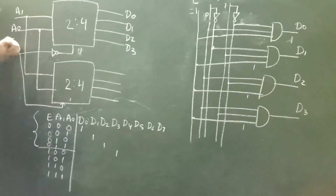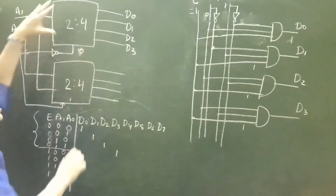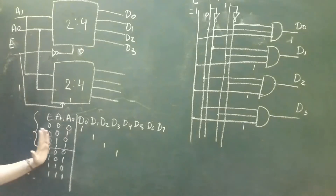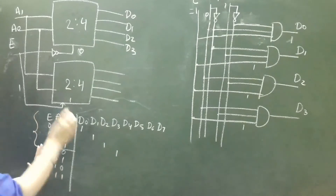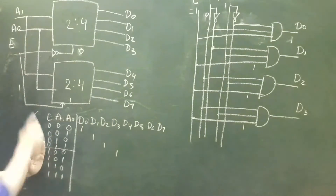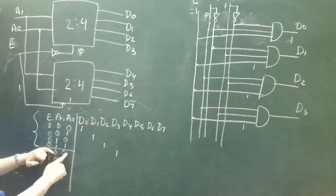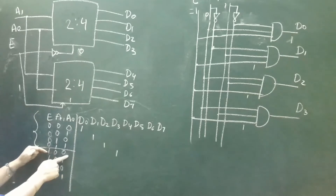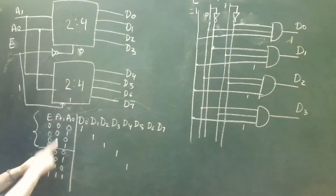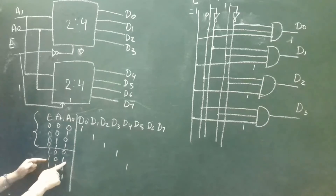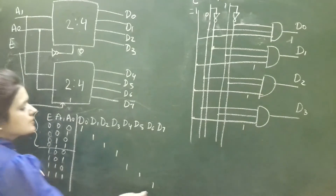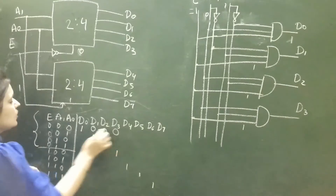When the value of E equals 1, complement of 1 is 0, so the upper decoder will be disabled. But the lower decoder will be enabled. I am marking these outputs as D4, D5, D6, and D7. When E equals 1 and A1 A0 is 00, the combination is 100 whose decimal equivalent is 4, so D4 will be enabled. Similarly 101 gives D5, 110 gives D6, and 111 gives D7. The remaining outputs will be 0 in all these cases.